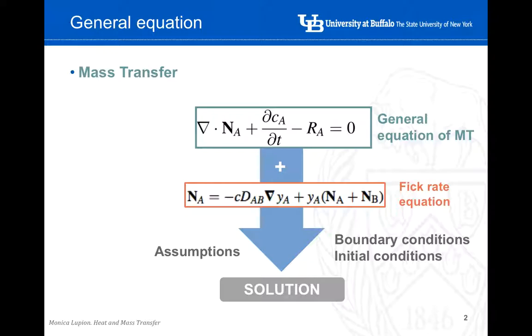We can combine that general equation of mass transfer with the Fick rate equation that we covered in lecture 10, where the molar flux was a composition of the molar flux due to the diffusivity, so the molecular diffusion, plus the mass transfer due to the bulk motion.